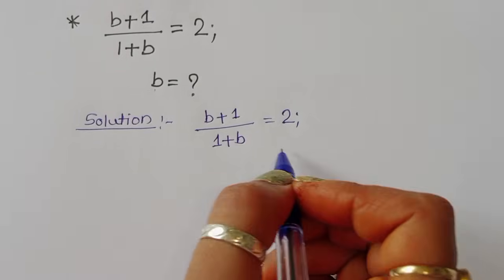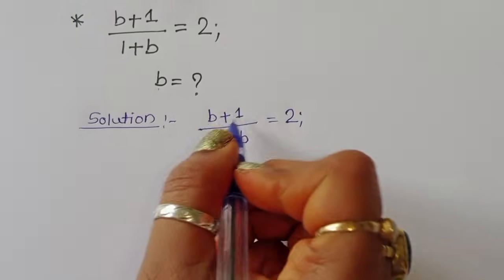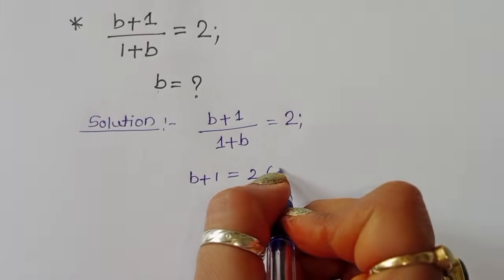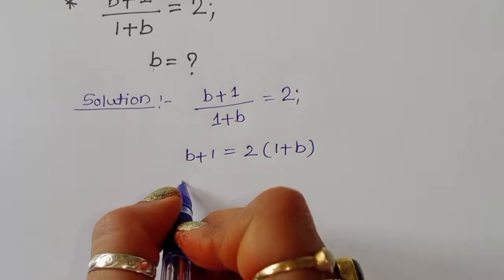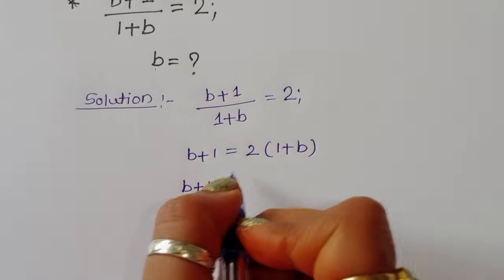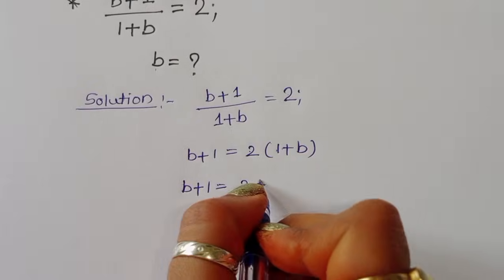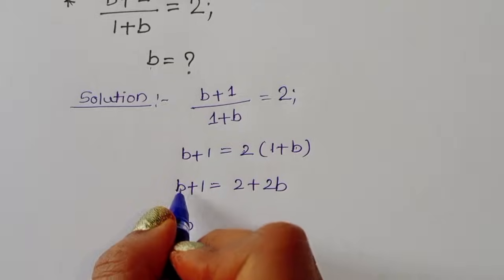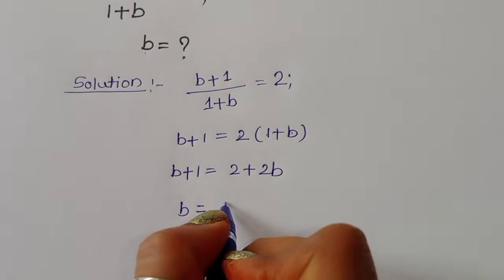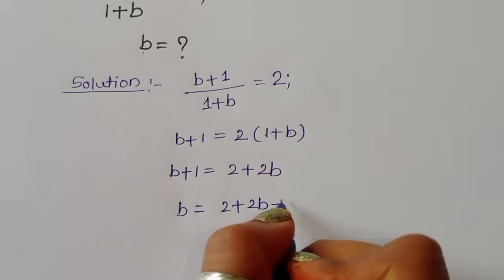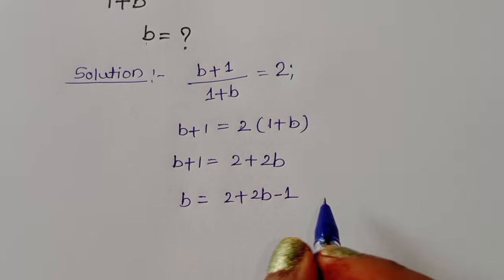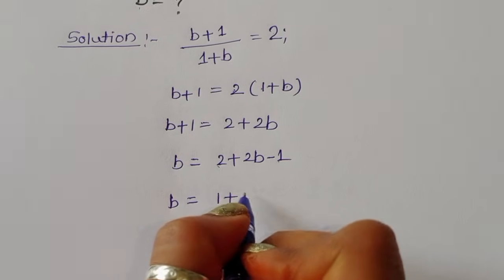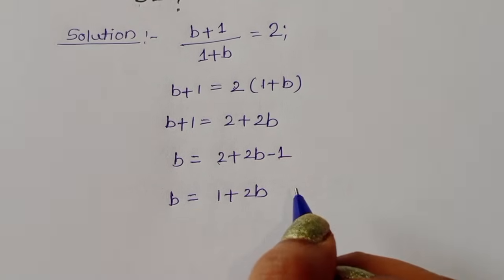Now we can write b + 1 is equal to 2 times (1 + b). Expanding: b + 1 is equal to 2 + 2b. So we can write b is equal to 2 + 2b minus 1, and since 2 minus 1 is 1, we get b is equal to 1 + 2b.